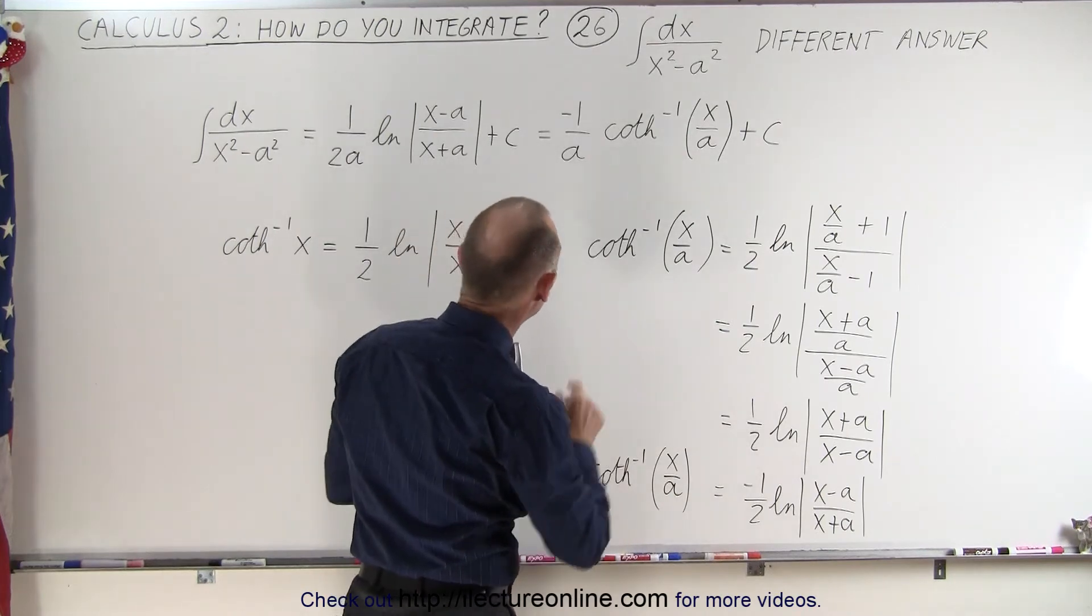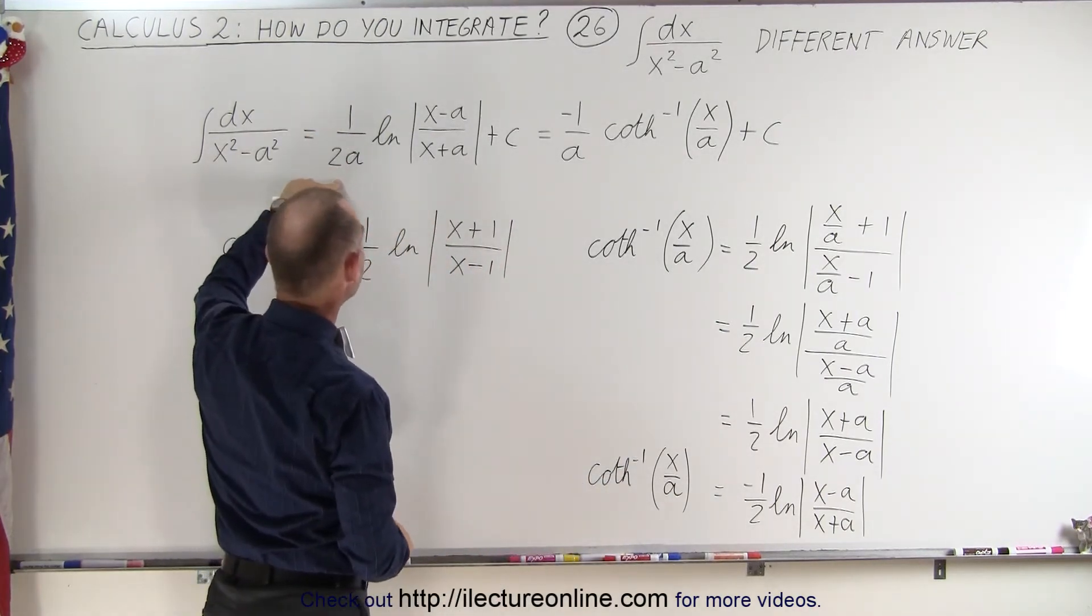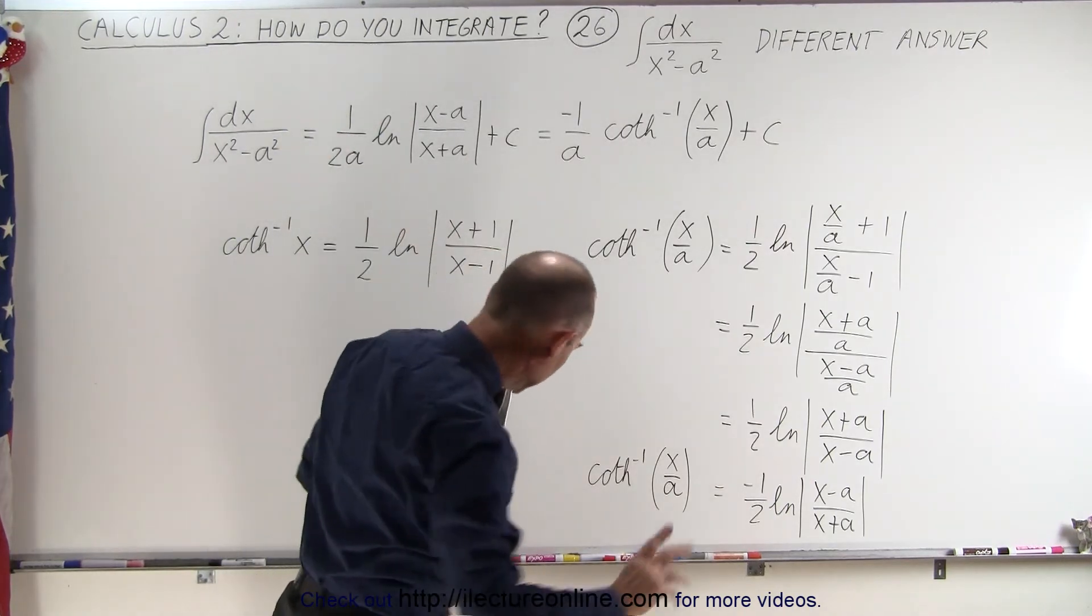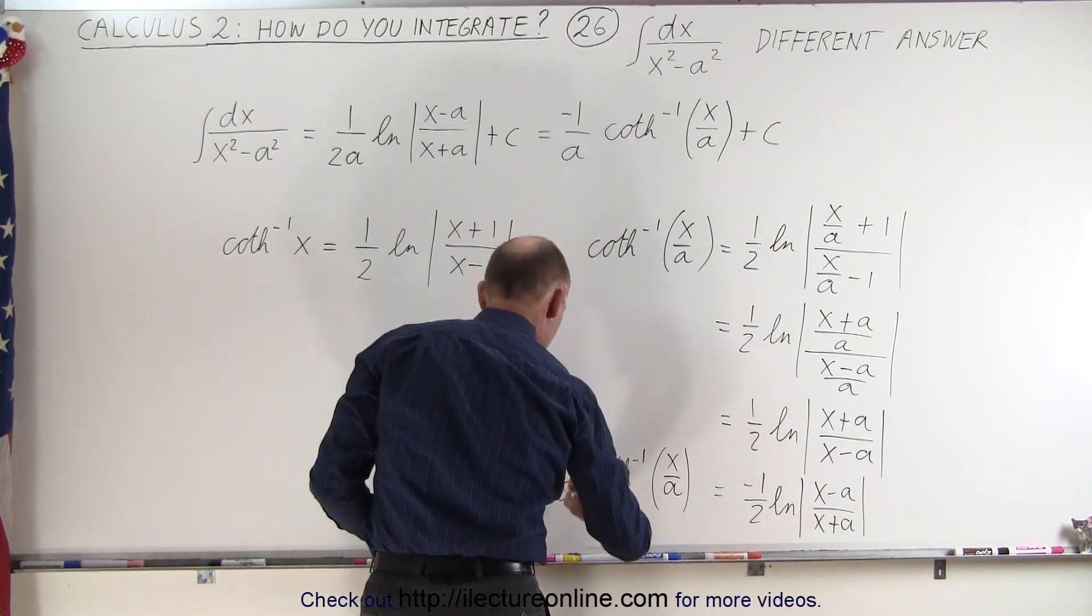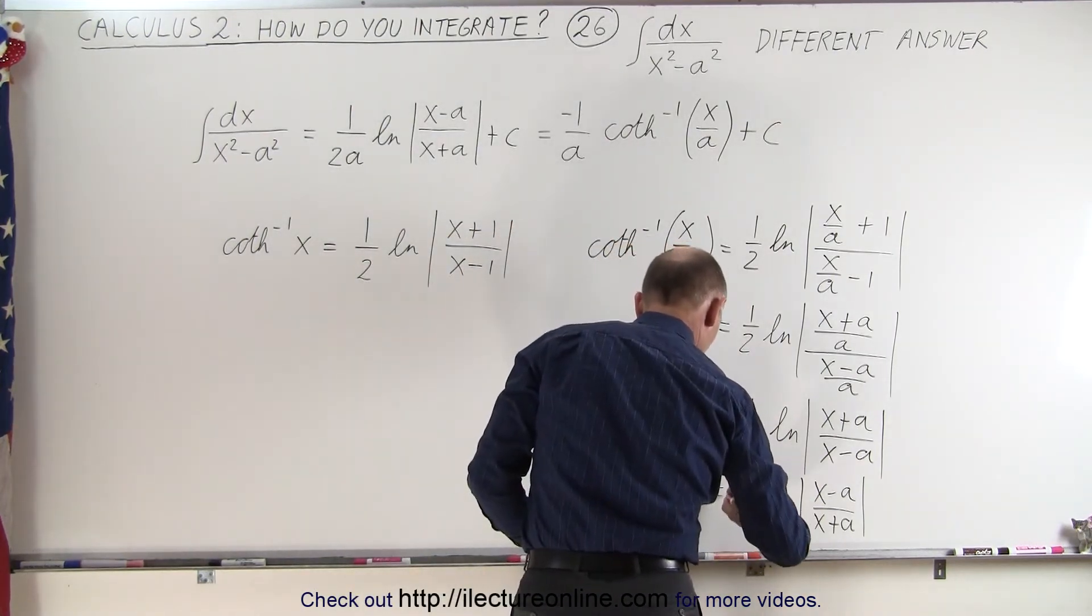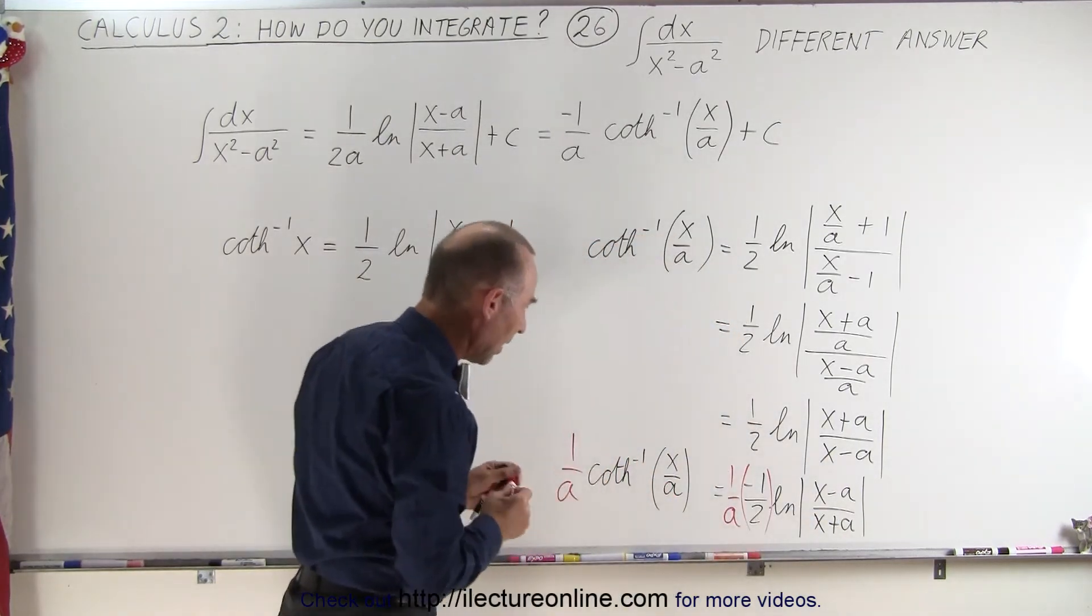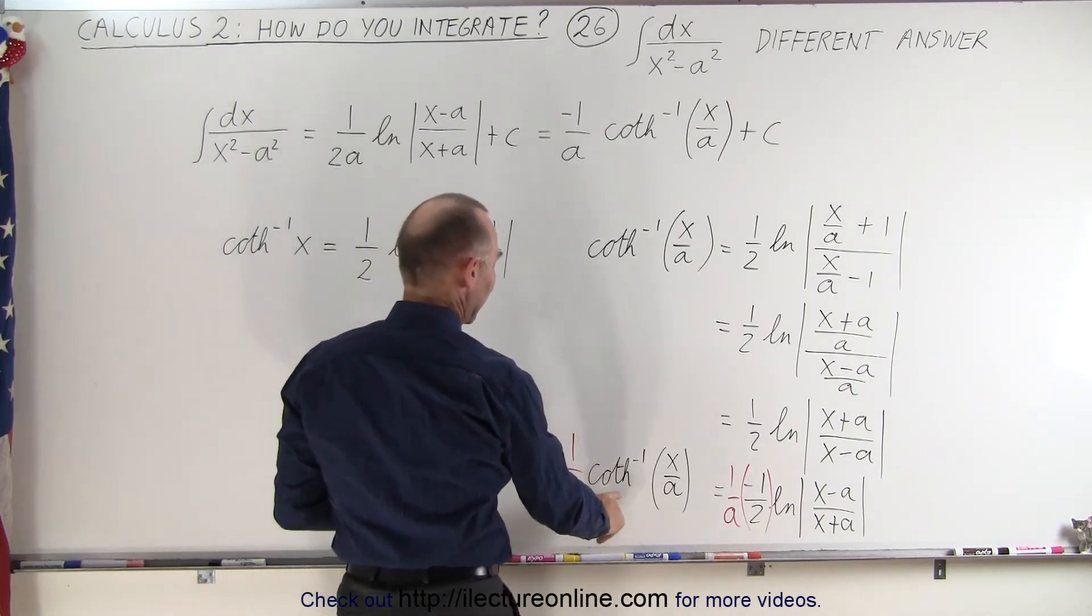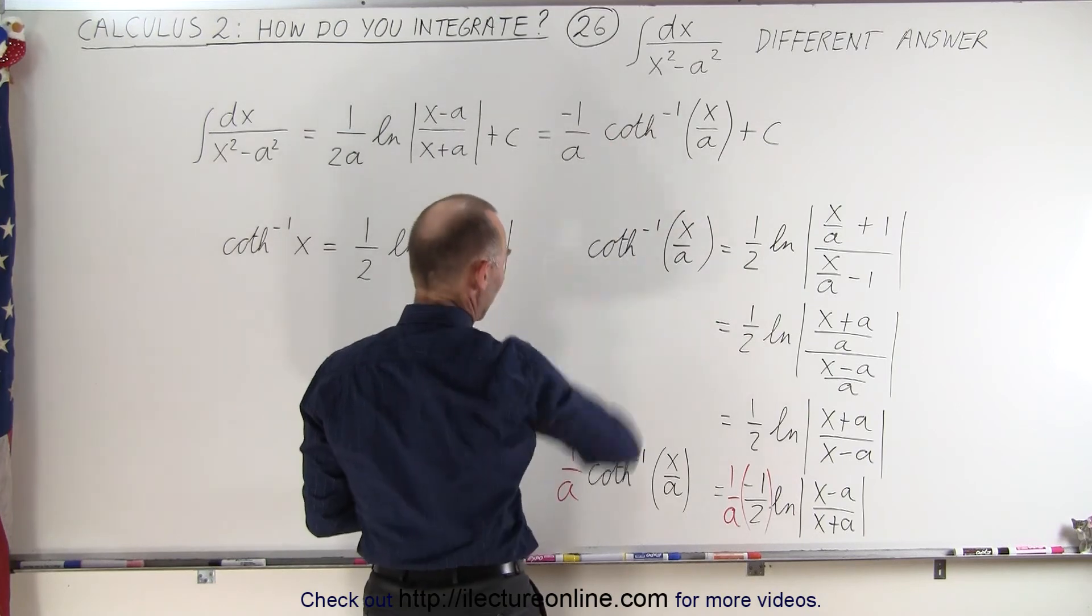What if we multiply the left side by 1 over a, and we multiply the right side by 1 over a? So now on the left side we have 1 over a times the inverse hyperbolic cotangent of x over a, which is almost what we have over there.